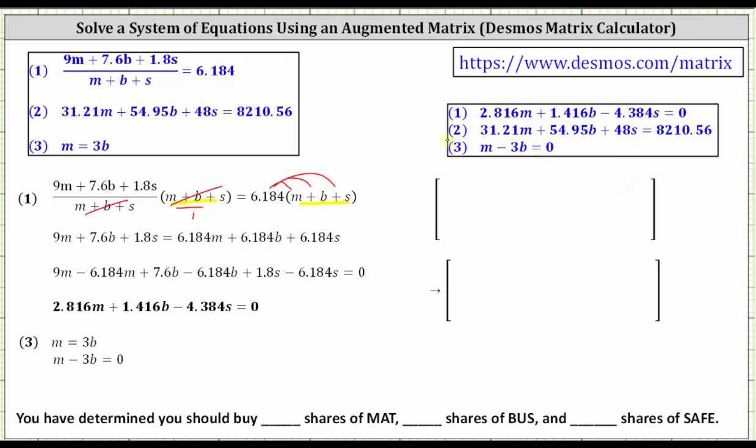For the first row using equation 1, we have 2.816, 1.416, -4.384, and then 0. For the second row, we have 31.21, 54.95, 48, and then 8,210.56. And for the third row, notice how there is no S term, so the coefficient of S is zero, giving us a row of 1, -3, 0, 0.